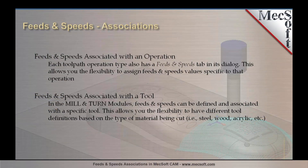In terms of feeds and speeds, these can be associated with either an operation or a tool. Each toolpath operation type has a feeds and speeds tab in the dialog, which allows the flexibility to design feeds and speeds values specific to that operation. In the mill and turn modules, you can also define feeds and speeds for every specific tool, allowing different tool definitions based on the type of material being cut — for example, wood, steel, or acrylic.